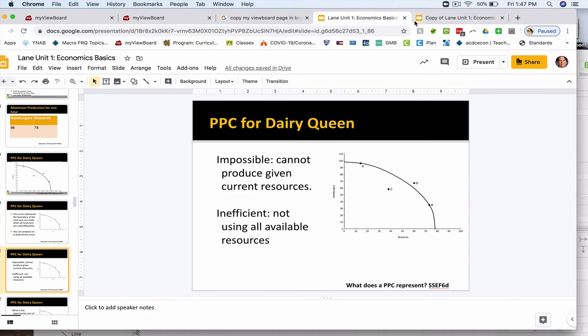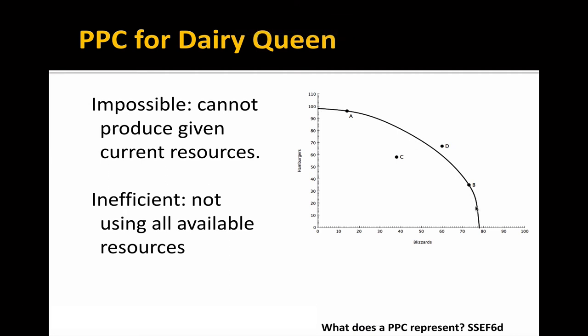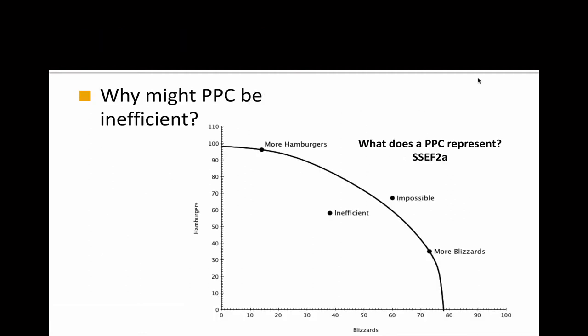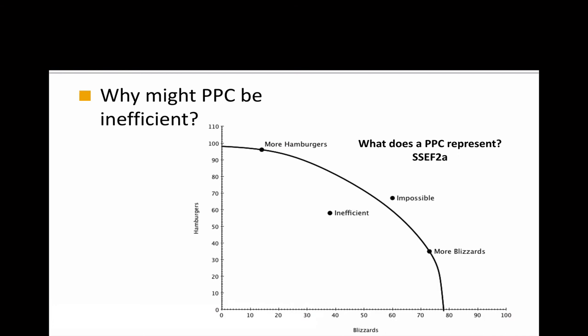As you're well aware in real life, we are often inefficient, so working on this line is more of a goal. Anything behind this line is a possibility; anything in front of this line is impossible. We'd be inefficient if one of our workers was texting or playing on her phone rather than grilling, or if a worker was cleaning the dining room — that's not producing hamburgers or blizzards. Looking at the PPC you graphed on your paper, give an example of something that might happen that would cause that PPC to be inefficient.